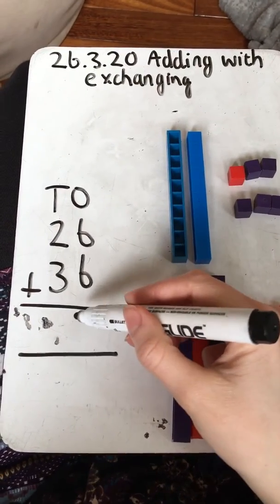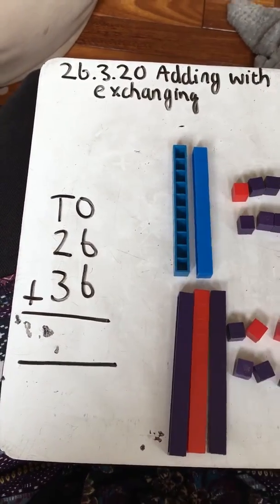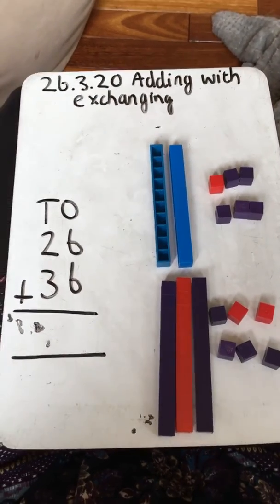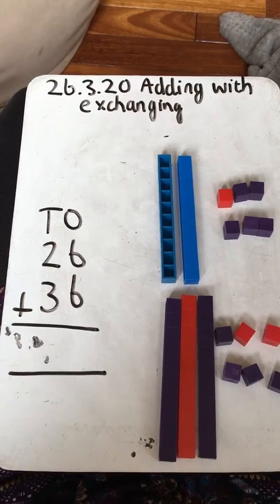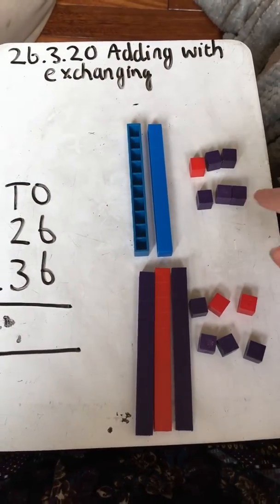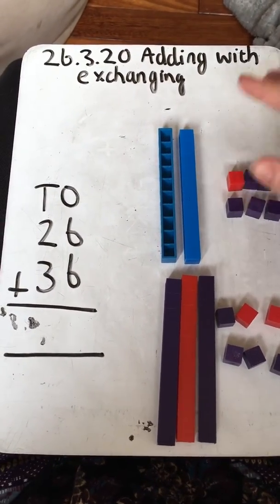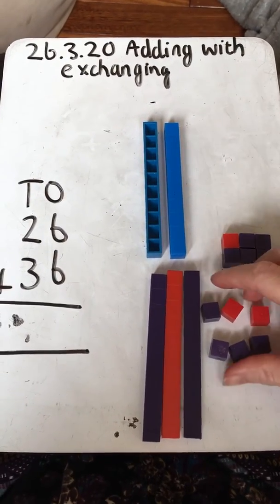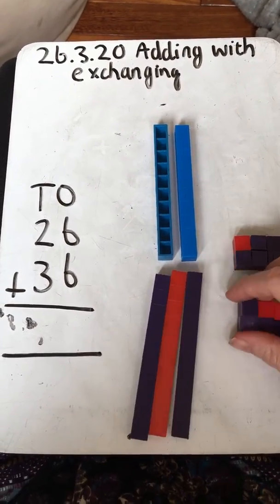But I can't write my 12 in here in my ones. So what I need to do is exchange 10 of my ones for 1 ten. I'm going to count here. I've got my 12 ones and I can't have these 12 ones in my ones column.